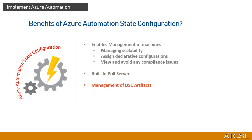The third benefit is the management of DSC artifacts. DSC artifacts of Azure Automation State Configuration can be managed from within the Azure Portal or from PowerShell. Additionally, you can import reporting data into Azure Monitor logs. Reporting data from target nodes managed by Azure Automation DSC is sent to the built-in pull server and can then be forwarded to the Log Analytics workspace for detailed analysis.